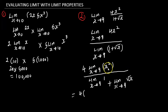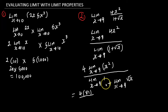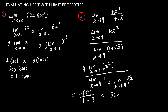The limit as s approaches 9 of s squared is going to be 9 squared, because we plug 9 in place of s, which gives us 81. So this is 4 multiplied by 81. Then divided by: the limit as s approaches 9 of 1 is equal to 1, using the constant function rule, because the limit of any constant is always that constant. The limit as s approaches 9 of the square root of s is equal to the square root of 9, which gives us 3. So the denominator is 1 plus 3. So we have 4 multiplied by 81 equal to 324, divided by 4. Evaluating this, we get the value 81. So this is going to be the limit.